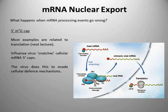What I want to focus on now is what happens when these processes go wrong. In terms of the 5' cap, most of the disease-related consequences for mutation of the cap relate to errors in translation — the cap is also very important in translation initiation, as we'll see in the next lecture. But there is a nice example of the cap being involved in disease with regards to influenza.